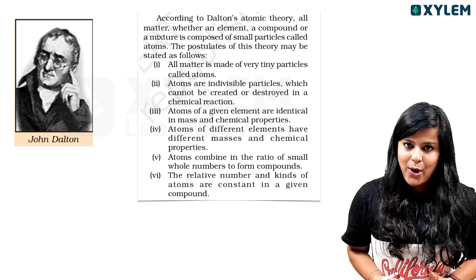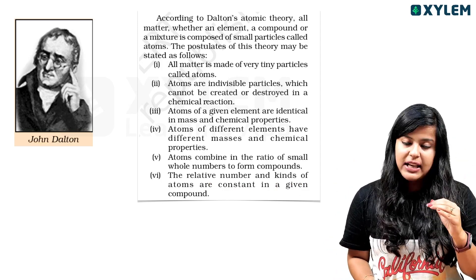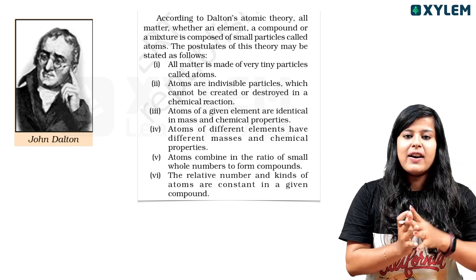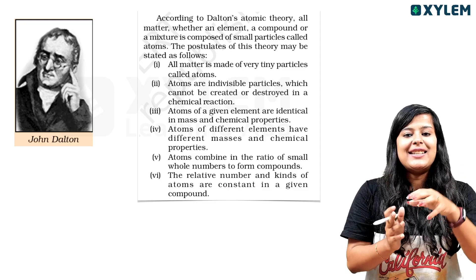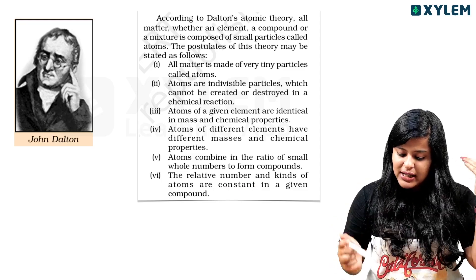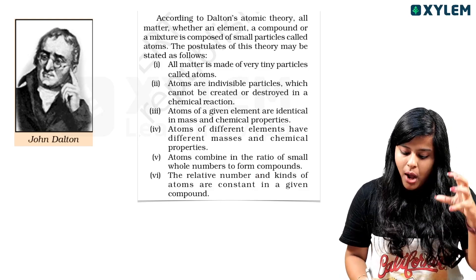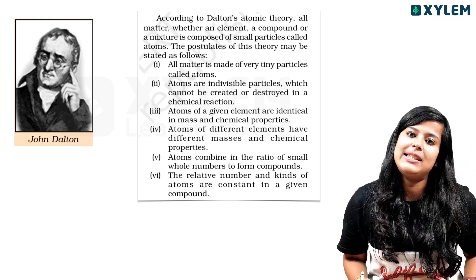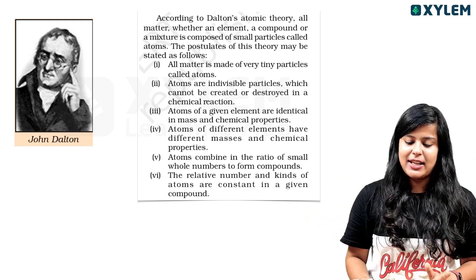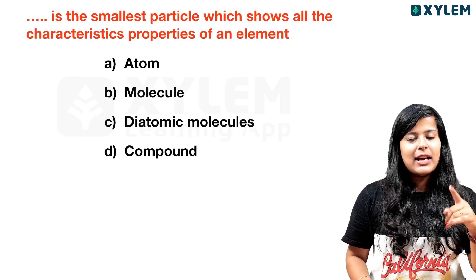The relative number and kind of atoms are constant in a given compound. For example, in H2O, there are always 2 hydrogen atoms and 1 oxygen atom — the ratio is constant. The postulate that 'atoms of the same element combine in only one ratio to produce more than one compound' is NOT correct, so that is the answer. This is Dalton's atomic theory.